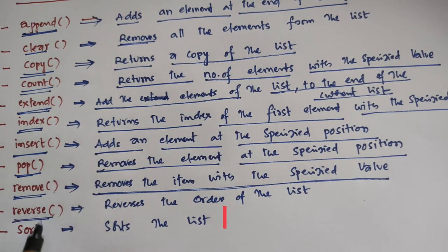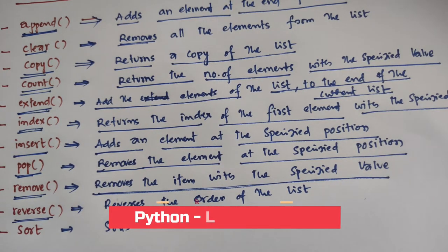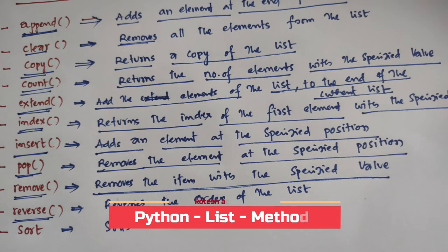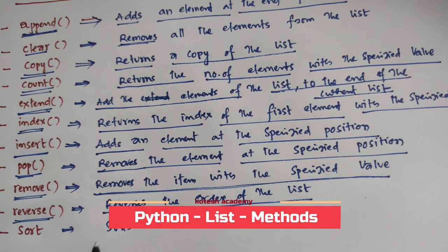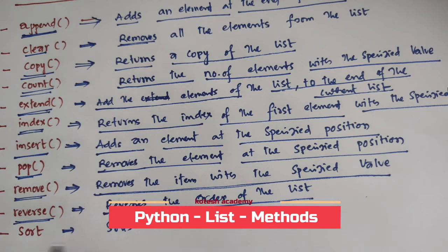Next, reverse. Reverse means whatever item is available at the ending should be represented first. That is, it reverses the order of the list.